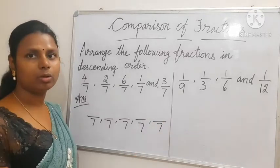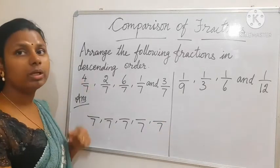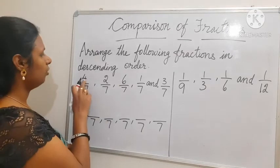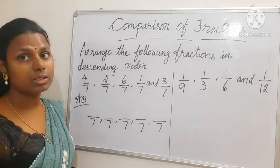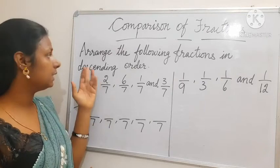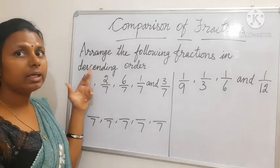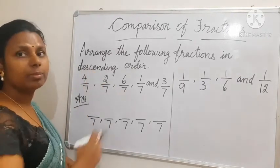I have written the denominator. Now let's do the numerator: 4, 2, 6, 1, 3. Which is the biggest number? Because we are writing in descending order, which is the biggest one here?